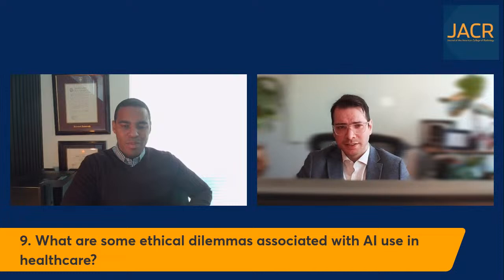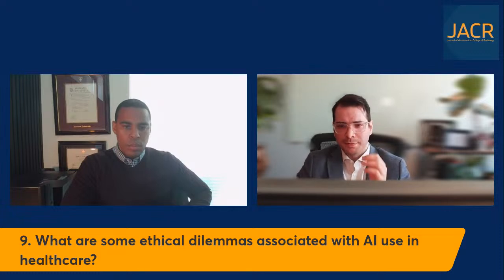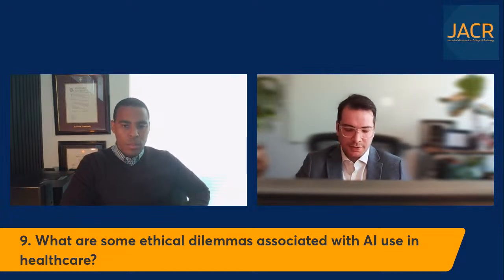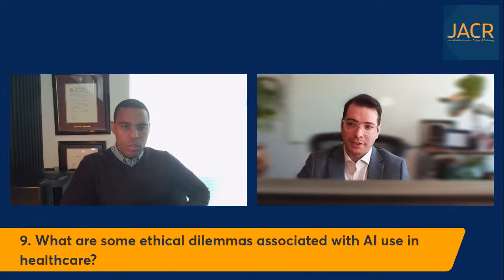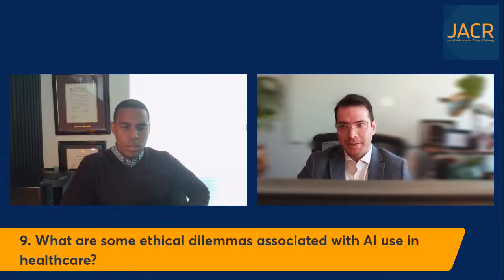Bias has to be constantly assessed — the data, the performance across different groups in your AI tools — to make sure it's not varying unfairly. There should be clarity in the decisions an AI algorithm comes to in order to enable equitable treatment. You've got to understand why an AI said something, and if necessary intervene and change that recommendation using your professional judgment.